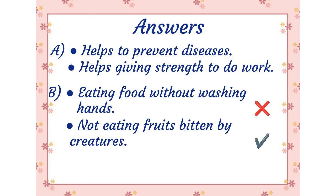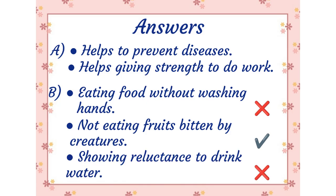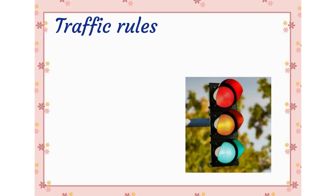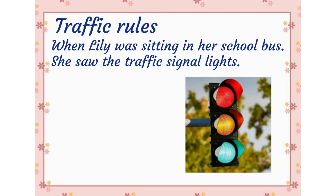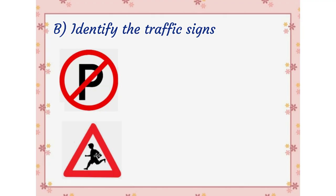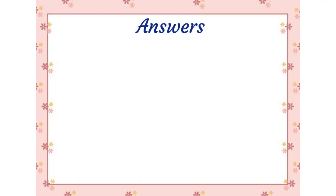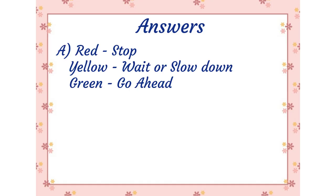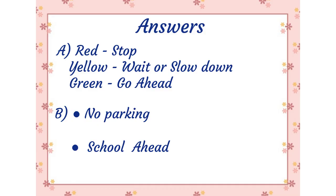When Lily was sitting in her school bus, she saw the traffic signal lights. A. What does each color and sign on the signal light indicate? B. Identify the traffic signs. Answers. A. Red — Stop; Yellow — Wait or slow down; Green — Go ahead. B. First picture: No parking. Second picture: School ahead.